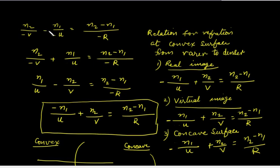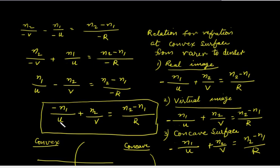On further simplification, this becomes negative N2/V plus N1/U equals N2 minus N1 divided by negative R. Shifting terms and multiplying both sides by negative one to remove the negative sign, we get: negative N1/U plus N2/V equals N2 minus N1 divided by R. This is the expression for refraction at a concave surface producing a virtual image.